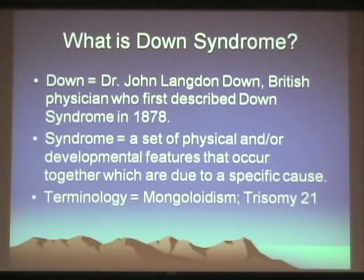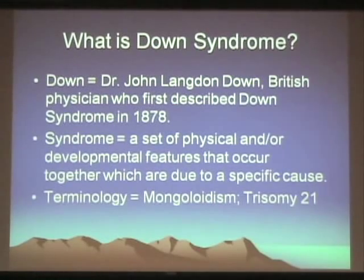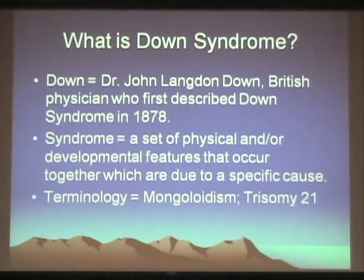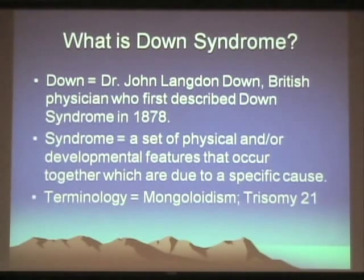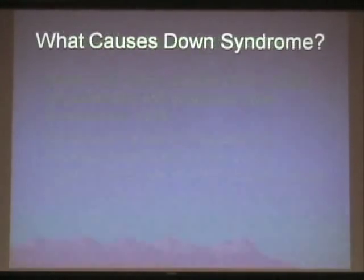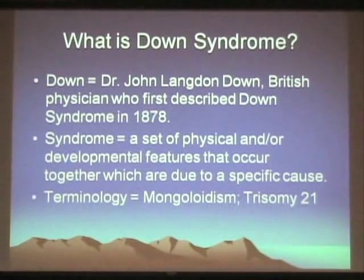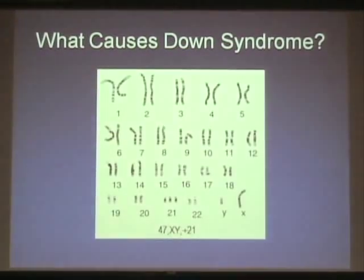There's some old-fashioned terminology still occasionally used — one is 'Mongoloidism.' In Dr. Down's day, his description of these children reminded him of people from Mongolia in terms of physical characteristics, and that's where that term came from. From a medical standpoint, we use the term 'trisomy 21' to indicate the chromosomal cause of Down syndrome.